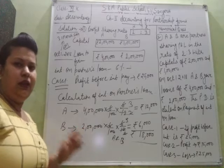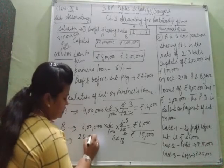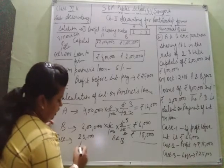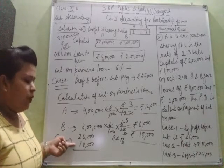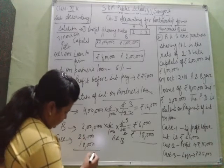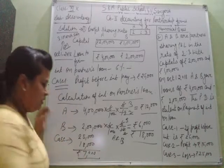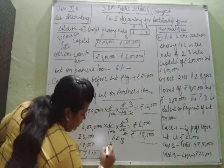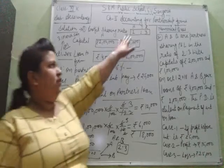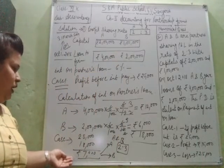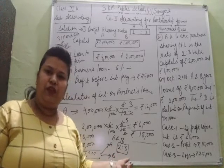We will calculate the remaining profit in Case 1. The available profit is Rs 25,000. We have paid interest on partner's loan of Rs 18,000. So the remaining profit will be Rs 7,000, which will be distributed among A and B in the profit sharing ratio of 2:3.